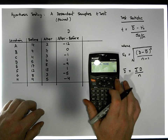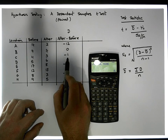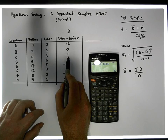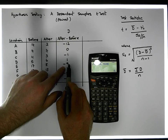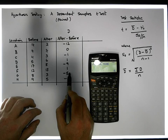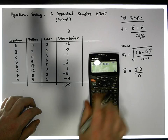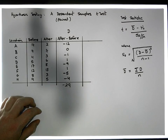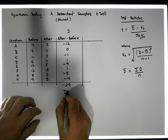So what we're going to do is add up these values. That's minus 12 plus minus 1 gives us minus 13, plus 1 gives us minus 12, plus minus 9 gives us minus 21, plus 1 gives us minus 20, plus minus 5 gives us minus 25, and plus minus 4 gives us minus 29. This value we've just calculated is the sum of the differences.